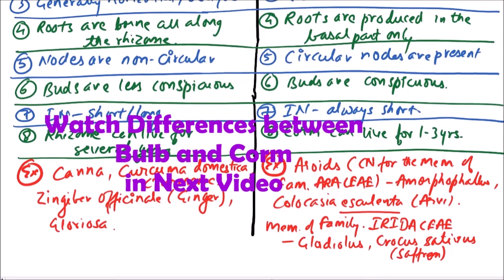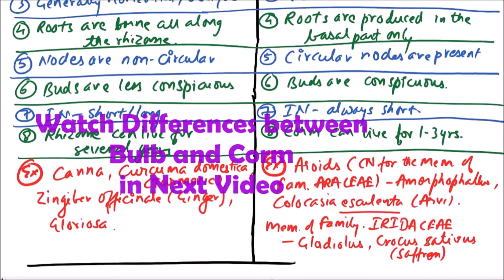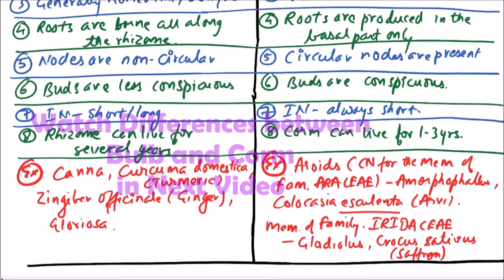So, these are the points of differences between a rhizome and a corm.